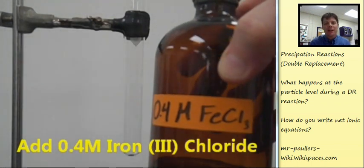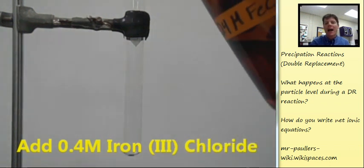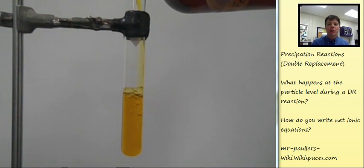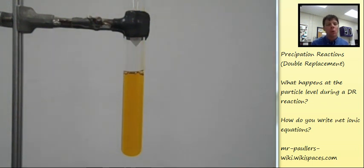So let's take a look at this type of reaction. We're going to add in some iron 3-chloride, that's FeCl3. This is an aqueous solution so the compound is dissolved in water. You can see it has kind of a brown orange color.